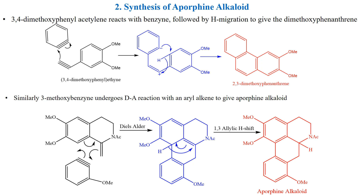Next is the synthesis of aporphine alkaloid. Aporphine has many important pharmacological activities, particularly anti-diabetic, anti-obesity, antioxidant, and anti-HIV activity. Here, 3,4-dimethoxyphenylacetylene reacts with benzyne, followed by the migration of hydride, to produce dimethoxyphenanthrine.